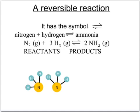The raw materials for this process are nitrogen gas and hydrogen gas and this reaction is reversible. That means that reaction can go in both directions. Nitrogen and hydrogen can react to make ammonia and also ammonia can break down to make nitrogen and hydrogen again.